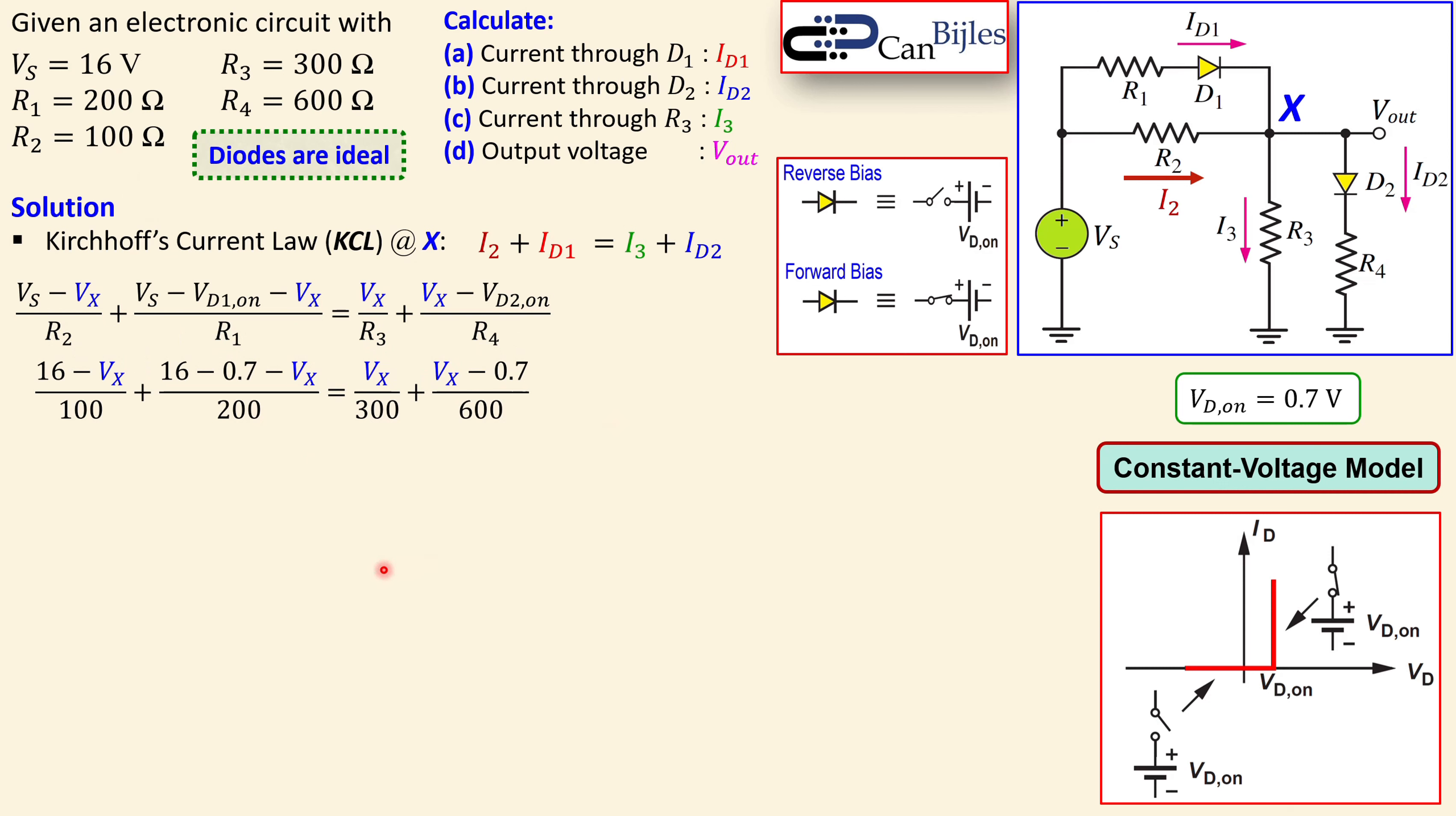Now we can simplify this by multiplying the left and right hand side by 600, so we can get rid of these fractions. So six times this, three times this one, two times this, and then just this one. Now if I collect the terms and work out this parenthesis, you will get 96 minus 6Vx, etc. You will see the expression here. Now we can collect the Vx terms and also the constants. So I will place the Vx on the right side and the constant on the left side.